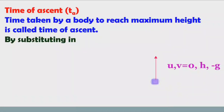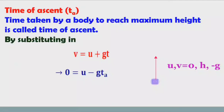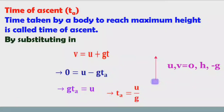By substituting these values in v = u + at: v is 0, u is the initial velocity, g is negative, and t is TA. So minus g·TA moves to the left side and becomes positive, giving g·TA = u, therefore TA = u/g. The formula for time of ascent is u/g. Remember this formula — it is very important.